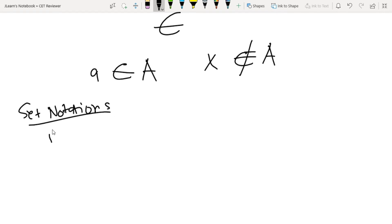We have three ways: roster method, second is rule method, and third is set builder notation.